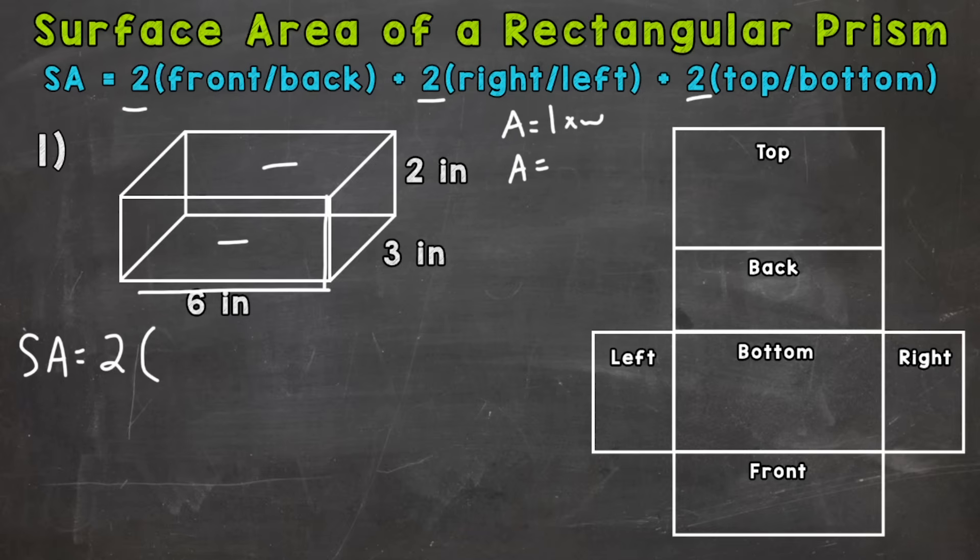Plug in. Area equals 6 times a width of 2. And we get an area of 12 square inches for the front. So we could plug in 12 here.